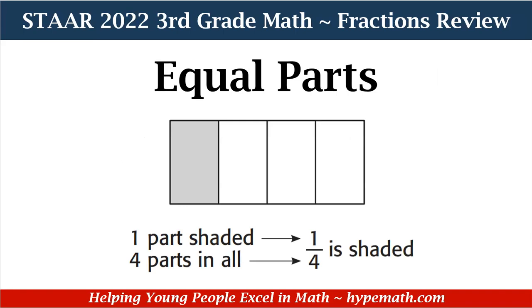Here we have an example of a shape with equal parts. It's a rectangle and we have four equal parts. Now, looking at the shaded part, let's write our fraction. We're looking for the one part that's shaded, so one will be our numerator and all of the parts that make up the whole — one, two, three, four. There are four parts that make up the whole, and that is our denominator.